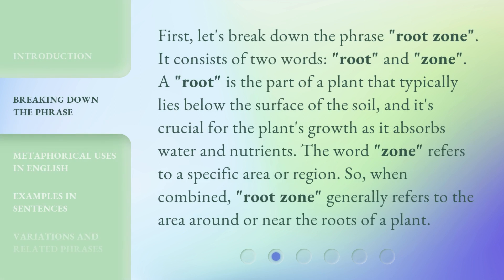First, let's break down the phrase Root Zone. It consists of two words: Root and Zone. A root is the part of a plant that typically lies below the surface of the soil, and it's crucial for the plant's growth as it absorbs water and nutrients. The word Zone refers to a specific area or region. So, when combined, Root Zone generally refers to the area around or near the roots of a plant.